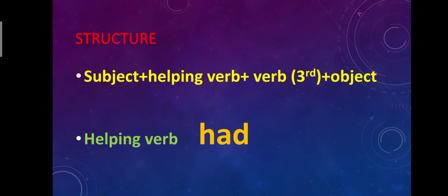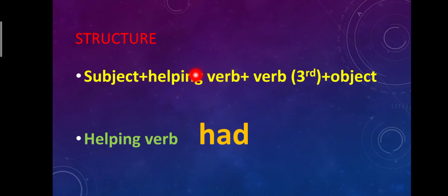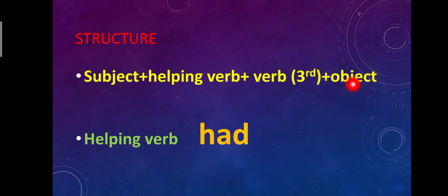Now, structure. Subject plus helping verb, plus third form of verb, plus object. In past perfect tense, the helping verb 'had' will be used. Its structure is: first the subject, then helping verb 'had', then the third form of the verb, then object. In past perfect tense, no matter what the subject is, we always use 'had'.